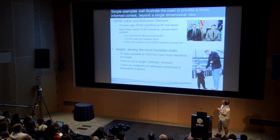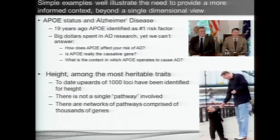We still don't know if ApoE is even the causative gene, and we don't understand the context in which ApoE operates. In other areas like height — a highly heritable trait — we now have upwards of 1,000 loci identified. What do you do with 1,000 genetic loci? There is no single pathway involved; there are networks comprised of thousands of genes.